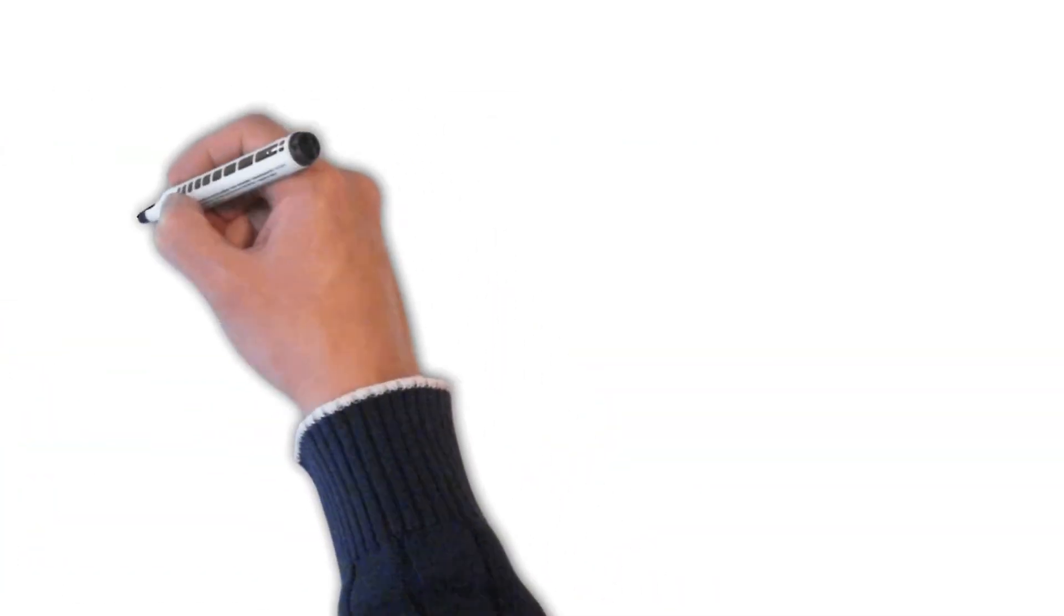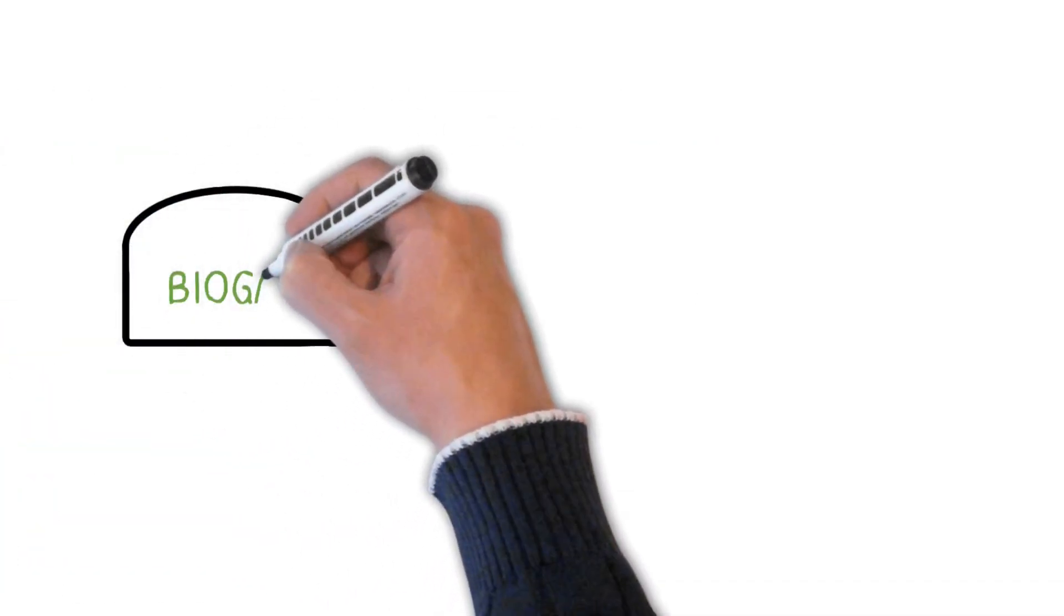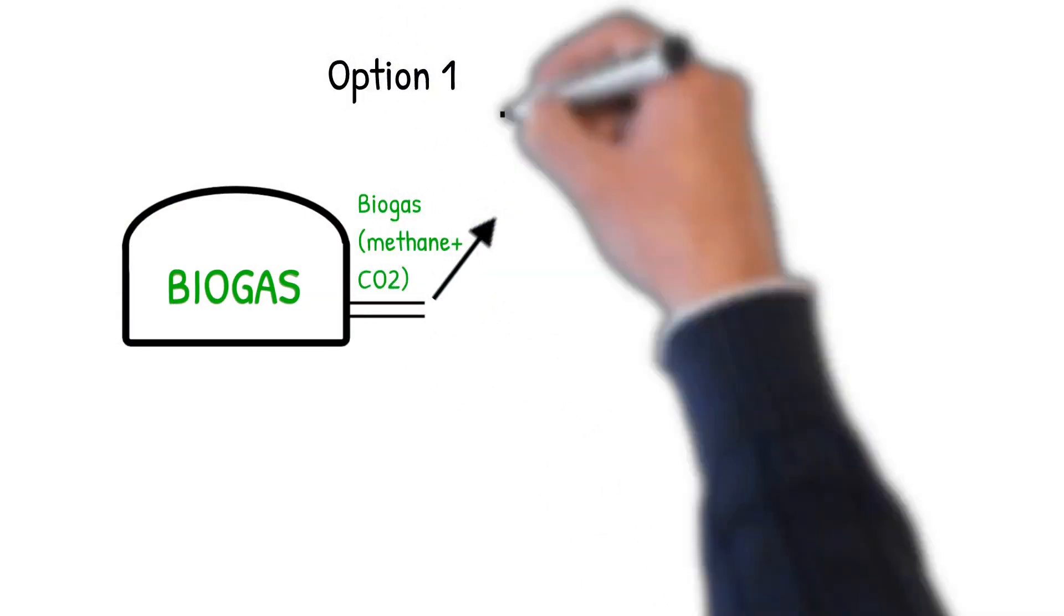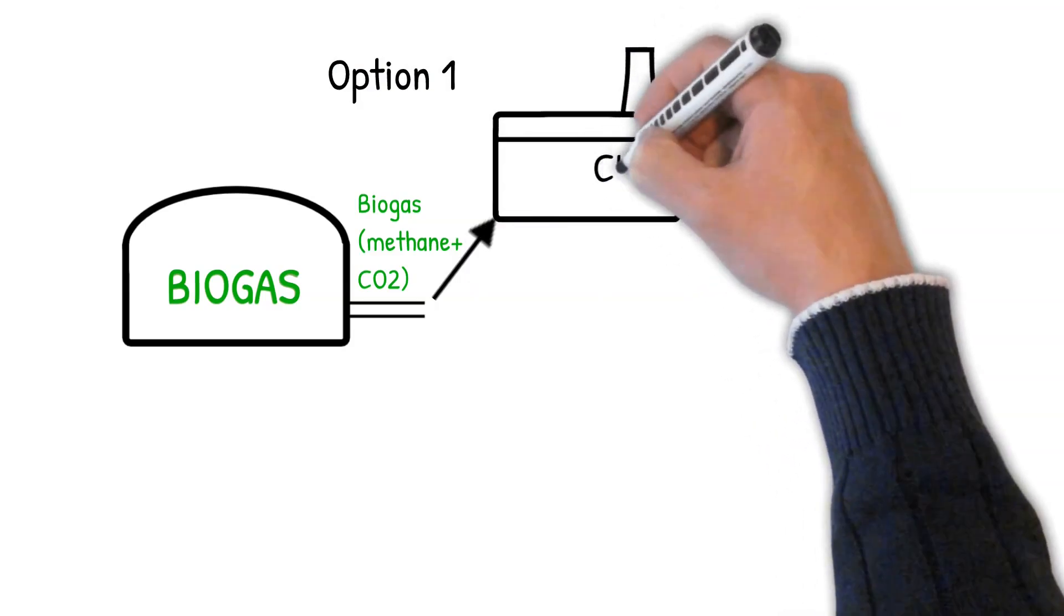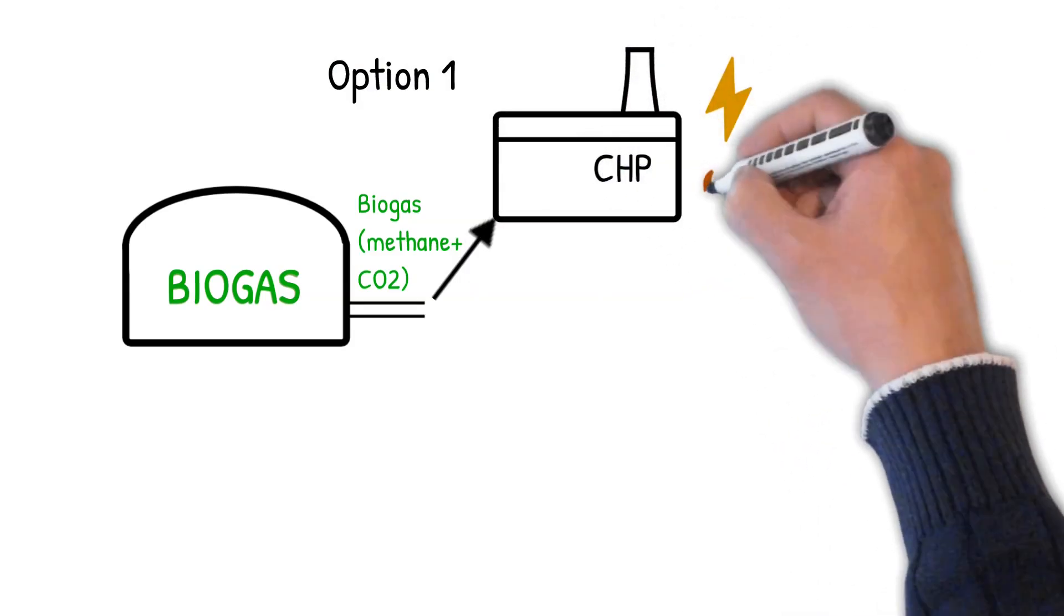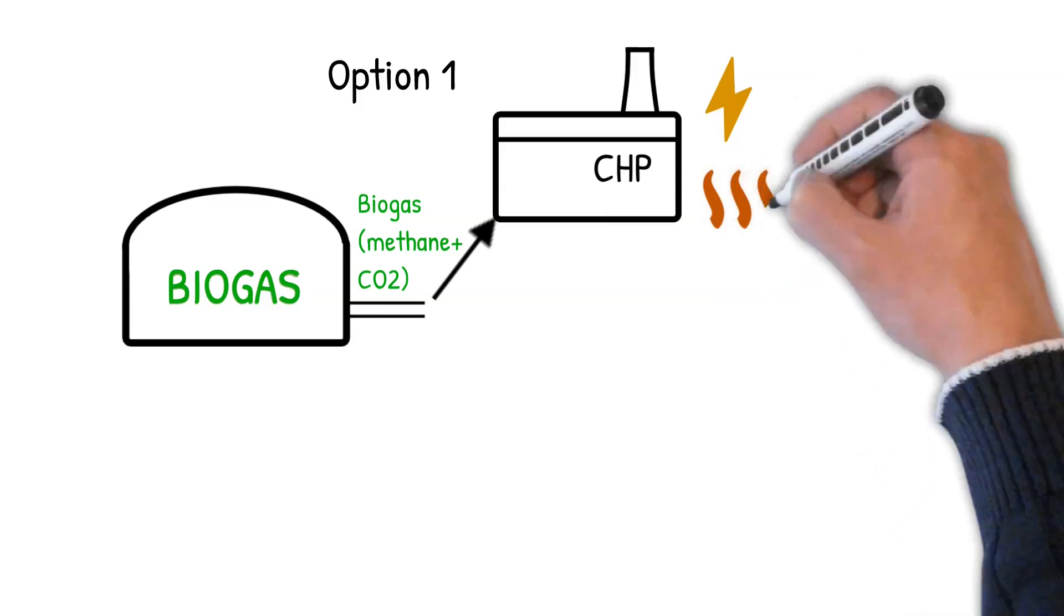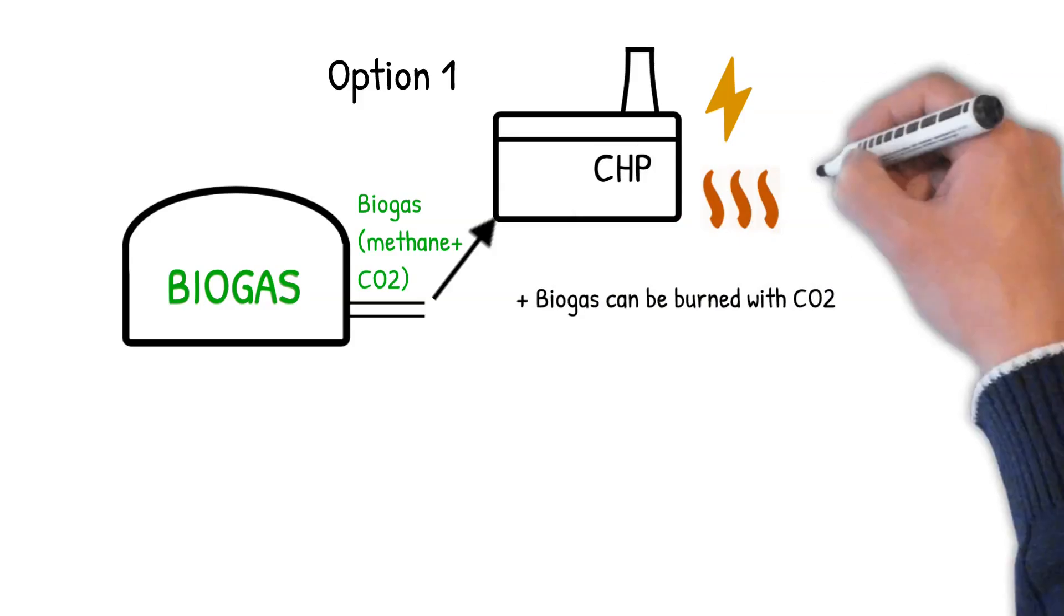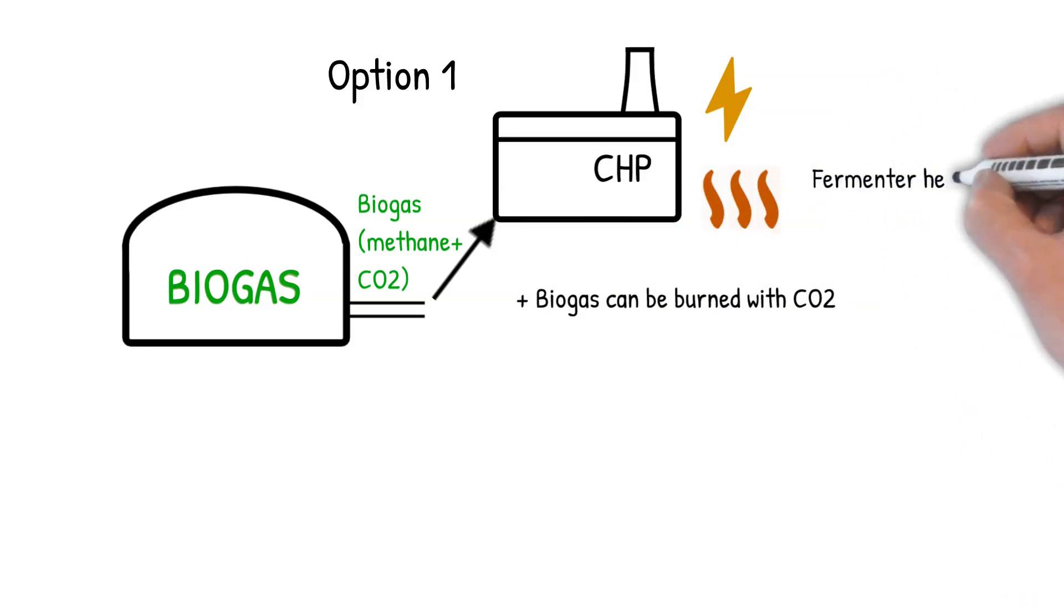In most biogas plants in Germany, the biogas, consisting of methane and CO2, is then fed directly into a CHP unit and converted into electricity and heat. This has several advantages. The biogas can be burned directly, despite its high CO2 content. With the resulting usable heat, the fermenter can be heated on the one hand and the farm and any greenhouses or similar can be heated on the other.